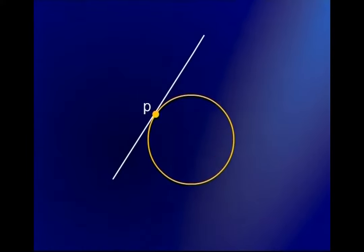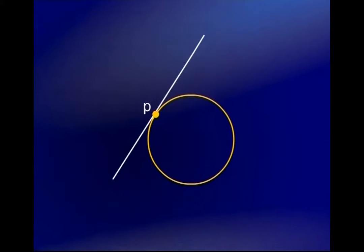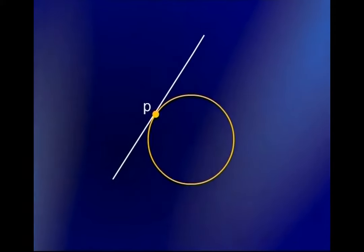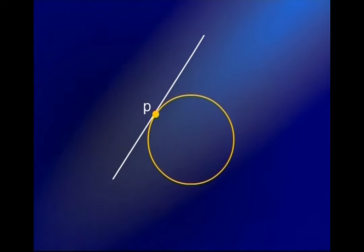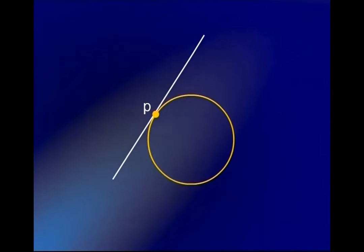Let's talk about the problem of defining a tangent line. If I have a graph of a function, a tangent line is a straight line that touches the curve at one point. Looking at a circle, we take a point P and draw a line that touches it at one point — that is what we want the tangent line to be.